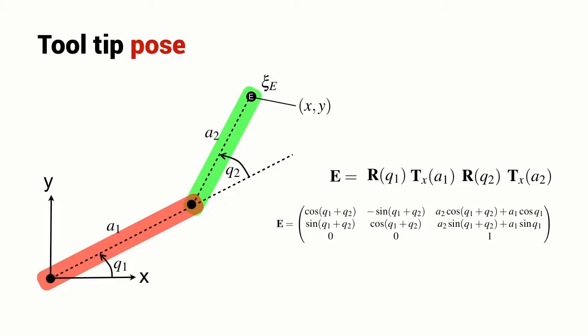Now, for this particular two-link robot, we're only interested in the position of its end effector, its X and Y coordinate. And they are these two elements within the homogeneous transformation matrix.